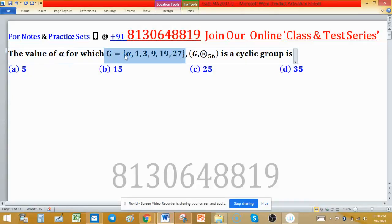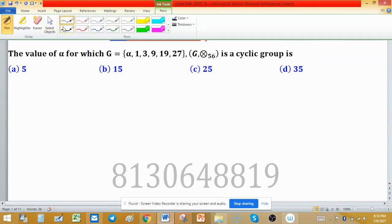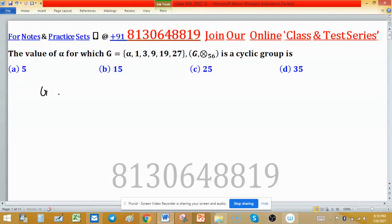The problem asks: which G, where elements of G are α, 1, 3, 9, 19, 27, forms a cyclic group under multiplication modulo 56? We need to find the value of α. Given that G is a group under multiplication modulo 56 and it is cyclic.